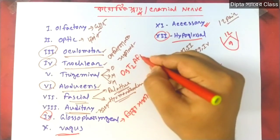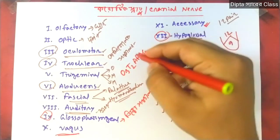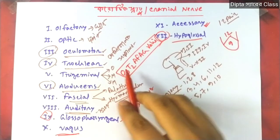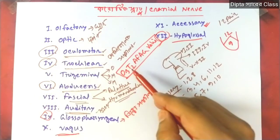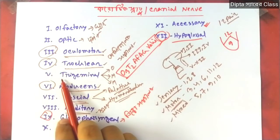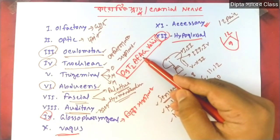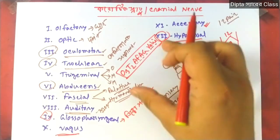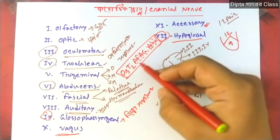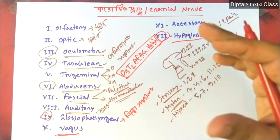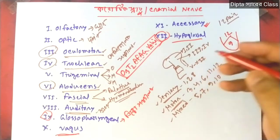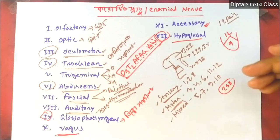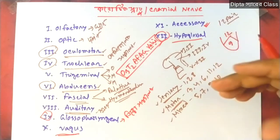The mnemonic serial is: O3, T2, O3, T2 — this pattern helps remember the cranial nerves. The names in order follow this serial system, and the name of the series and the sequence are important to remember.